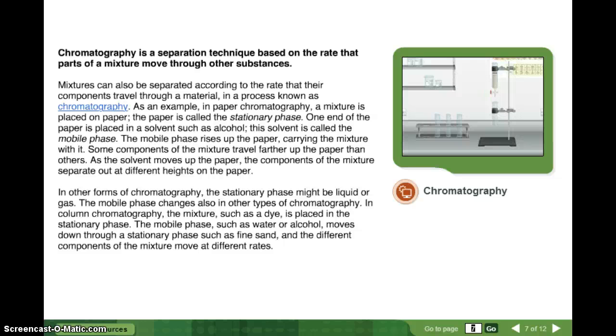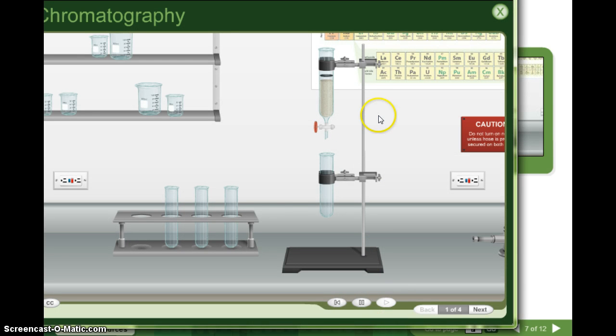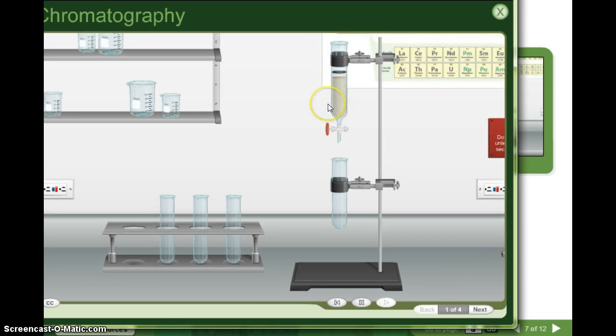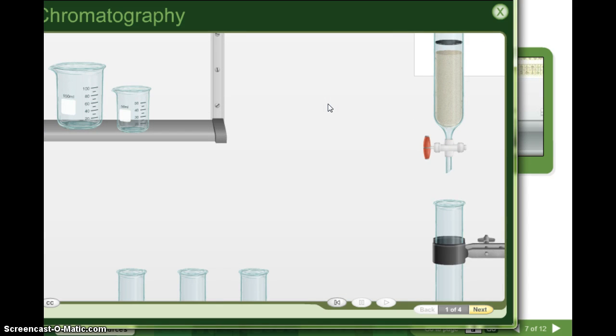In other forms of chromatography, the stationary phase might be liquid or gas. The mobile phase, the part that moves, changes also in other types of chromatography. In column chromatography, the mixture, such as a dye, is placed in the stationary phase. The mobile phase, such as water or alcohol, moves down through a stationary phase, such as fine sand, and the different components of the mixture move at different rates. Okay. In this example, we have an example of a column chromatography. So in this column, there is sand, and in this line at the top, they put some dye. And there's also some water in it as well. And the water is going to be our mobile phase, or the part that's moving. The sand is the stationary phase. That's the part that stays still. And we're testing the dye or the ink.